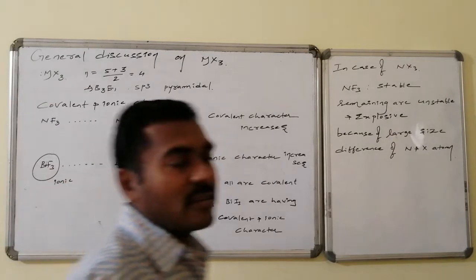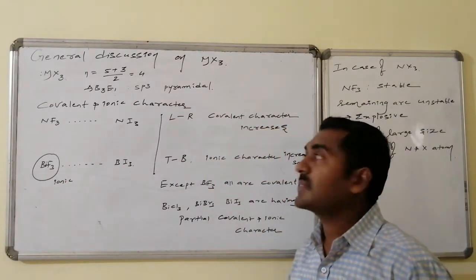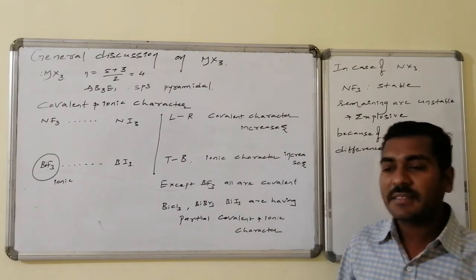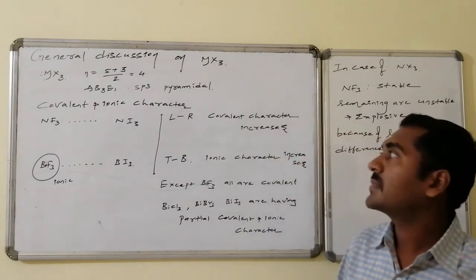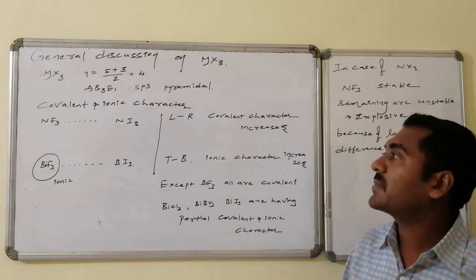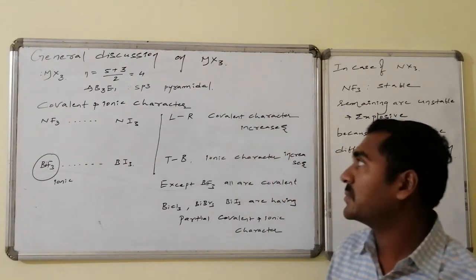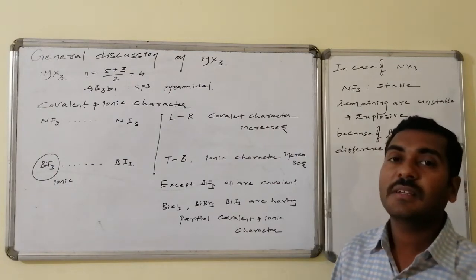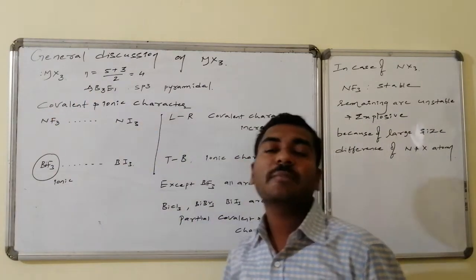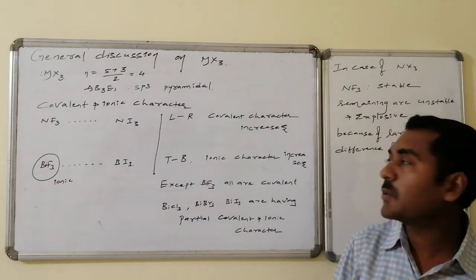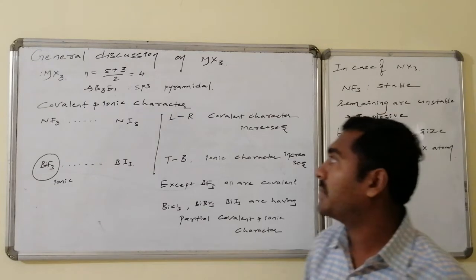General discussion on the trihalides of the 5A group elements. The general formula is given by MX3. As for structure and hybridization, the steric number equals the group number of central atom plus number of monovalent atoms divided by 2, which equals 4, implying sp3 hybridization. There are 3 monovalent atoms and one lone pair of electrons, giving AB3E1 type. Pyramidal is the geometry.